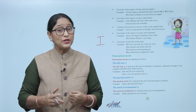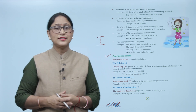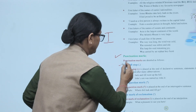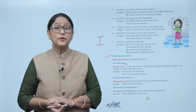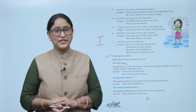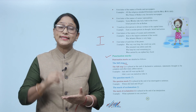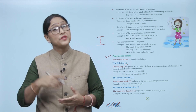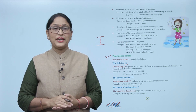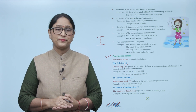Now, punctuation marks are detailed as follows. The full stop is placed at the end of declarative sentences — statements thought to be complete — and after many abbreviations. Examples: 'Jack and Jill went up the hill.' 'Johnson was named as John Jr.'